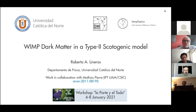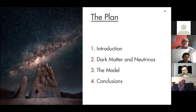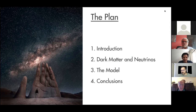The idea of my talk is basically a brief introduction on why dark matter and neutrinos may be good candidates to be 'la parte y el todo.' After that, some explanation of how they could be connected, with focus on a model in the class of scotogenic models, ending with conclusions and some expectations for future exploration with observatories here in the north of Chile.